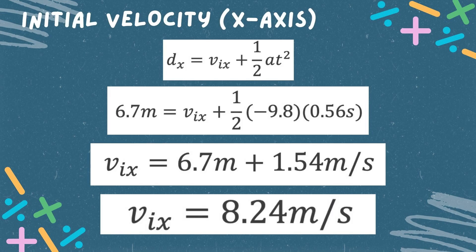Since we were able to find the time, we can now find the horizontal initial velocity using the formula: the horizontal distance is equal to the horizontal velocity plus 1.5 times acceleration times time squared. Now let us substitute the given and then solve for the horizontal initial velocity. After solving, we finally get the initial velocity: 8.24 meters per second.